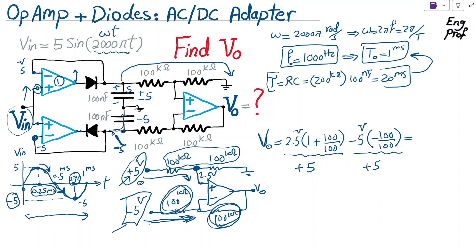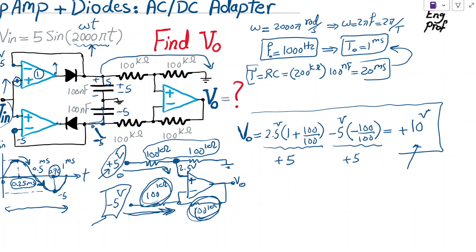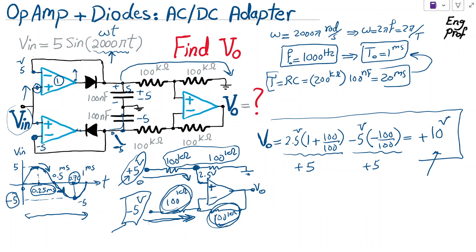So, Vout, effectively, is plus 10 volt. So, the steady state value of the output voltage after passing the first period of input signal with the given 1000 Hz frequency is going to be 10 volt. And, effectively, this op-amp-plus diode circuit acts like the AC to DC adapter because from a 5 sin(2000πt), it generates a roughly fixed constant 10 volt at the output. I hope that this example is helpful.